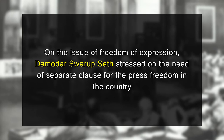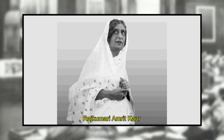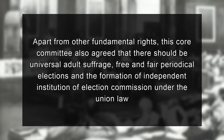On the issue of freedom of expression, Mather Saroop stressed on the need for a separate clause for press freedom in the country. During these deliberations, not only what rights citizens should be provided was discussed, but also what needed to be curtailed and banned. For example, K.M. Munshi and K.T. Shah proposed a ban on bonded agricultural and industrial labour, whereas Rajkumari Amrit Kaur proposed a similar ban on child labour. The core committee also agreed that there should be universal adult suffrage, free and fair periodical elections, and the formation of an independent Election Commission under union law.